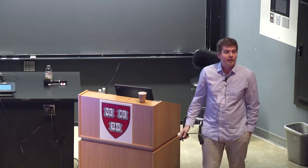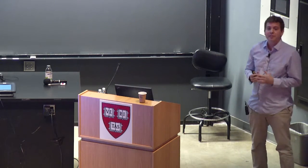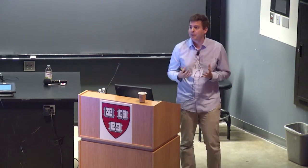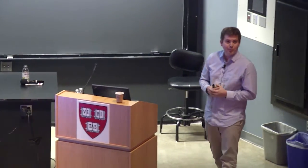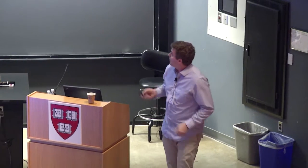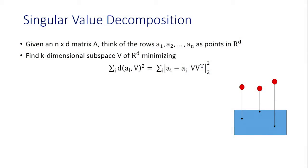This is work with Ken Clarkson. I'm going to talk about ways for compressing your data set, viewed as a matrix, which are different than the standard singular value decomposition. They're more robust in a certain sense. Let me review the singular value decomposition. You're given an n by d matrix A — think of this as n examples in R^d, where the rows A_1 through A_n are d-dimensional. You want to find a low-dimensional subspace V, k-dimensional, which minimizes the sum of squares of distances of your points a_i to this space.